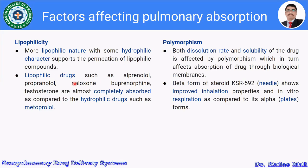The next factor is polymorphism. Both dissolution rate and solubility of the drug are affected by polymorphism, which in turn affects the absorption of drug through the biological membrane. Drugs are available in various polymorphic forms, and polymorphism affects both the dissolution rate and solubility of the drug. For example, the beta form of steroid KSR592, which is needle-shaped, shows improved inhalation properties.